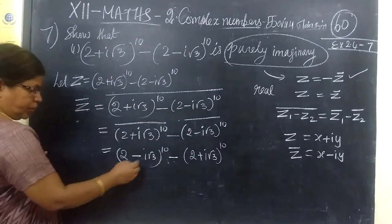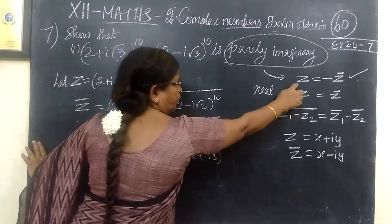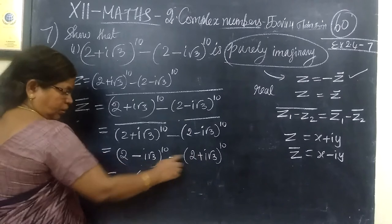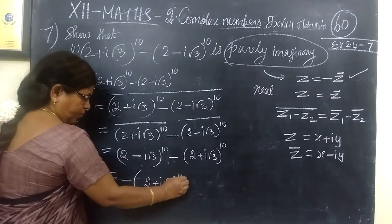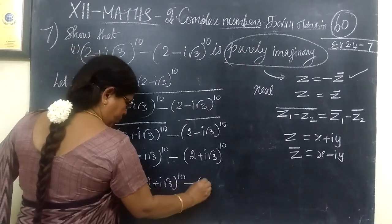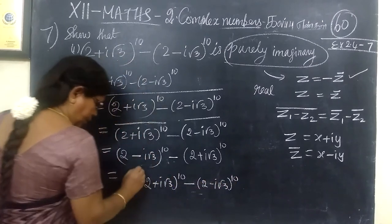So equal to, now the minus will be done with the minus. (2 plus i root 3) whole power 10 minus (2 minus i root 3) whole power 10. Terms appear repeat, minus is equal to minus. Terms is equal to repeat.